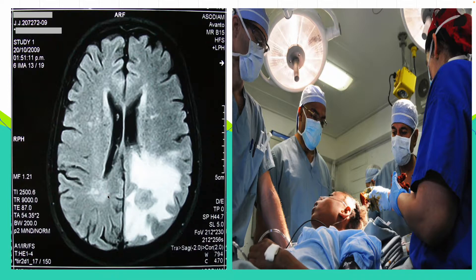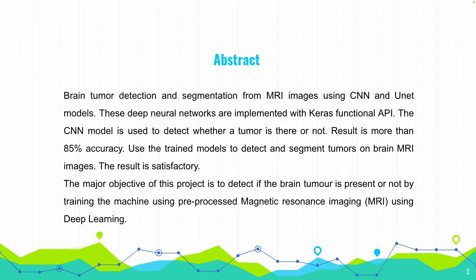After analysis, the doctor comes to the conclusion about what operation, surgery, or medication should be given to the patient for the removal of the tumor. As engineers, we should also contribute to the medical system. We have done a machine learning algorithm based prediction on brain tumor. We take MRI images, use CNN deep learning algorithms, analyze, visualize, predict, and identify which images are tumor and which are non-tumor.